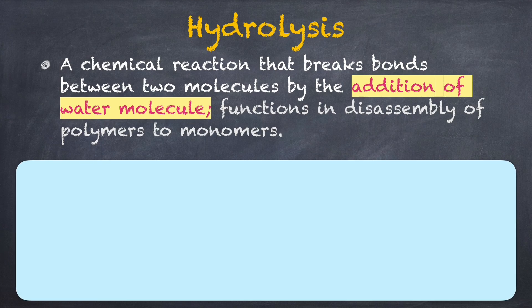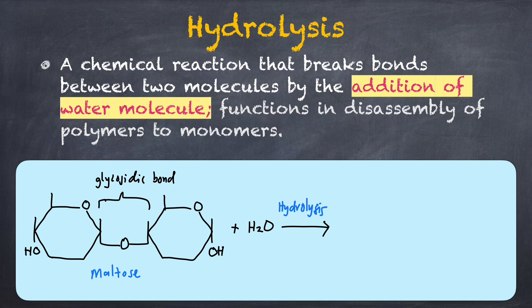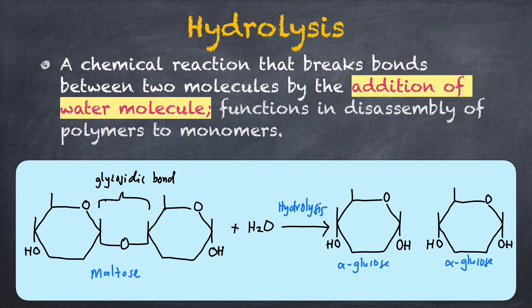As for hydrolysis, it is a chemical reaction that breaks bonds between two molecules by the addition of a water molecule. When maltose is added with H2O, which is a water molecule, the glycosidic bond of maltose will be broken down by the process of hydrolysis and form back the monosaccharides, which are two alpha glucose.